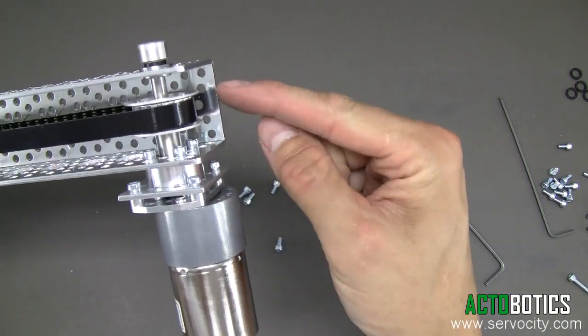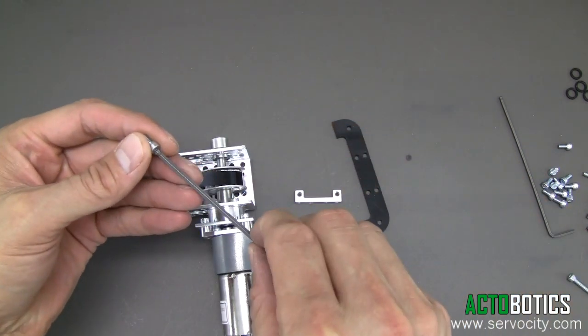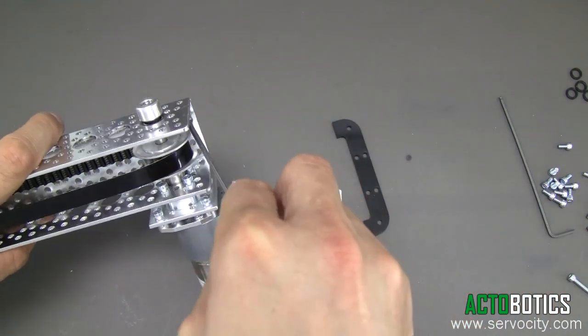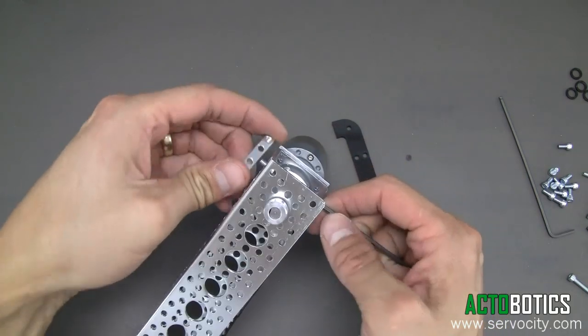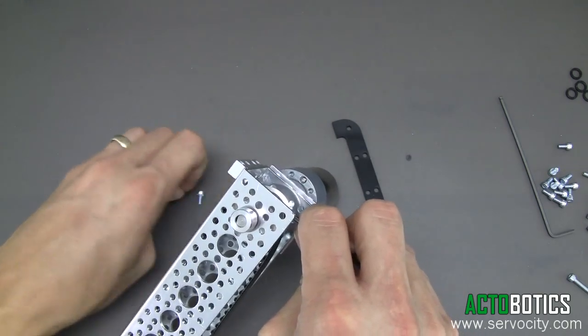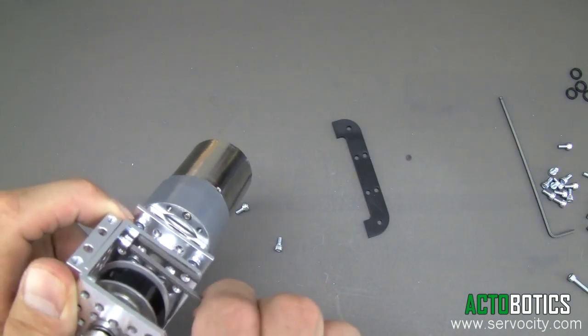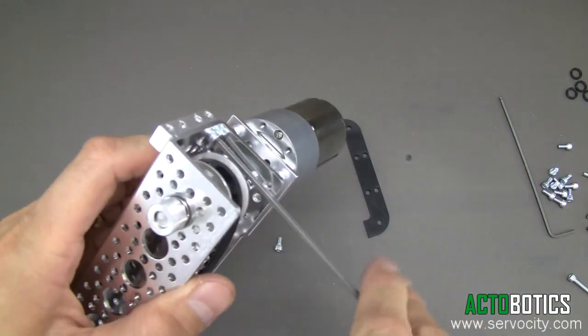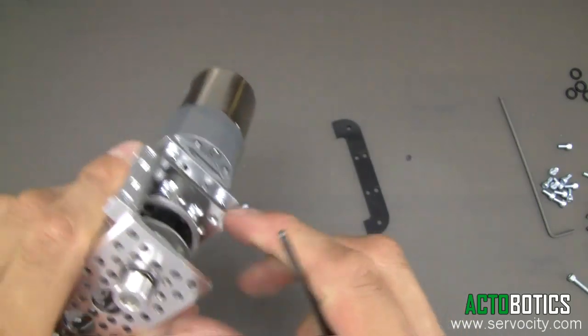On the motor side, we're going to go ahead and put them in right here. Go ahead and put one of the screws in here. Again, this is one of the simpler steps to do. Put the second screw in here, and go ahead and tighten this down.